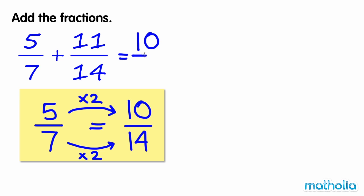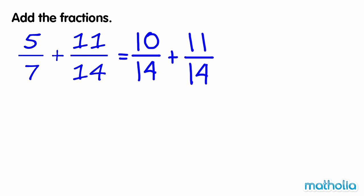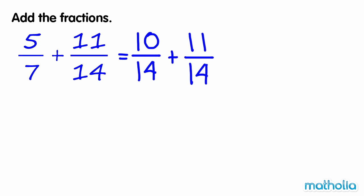So 5 7ths plus 11 14ths equals 10 14ths plus 11 14ths. The denominators are the same, so we can add the numerators. 10 plus 11 equals 21. So 10 14ths plus 11 14ths equals 21 14ths.